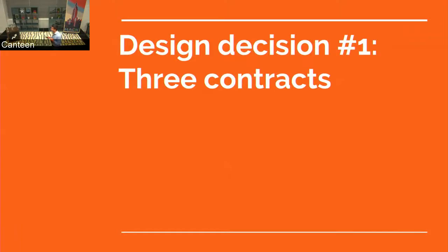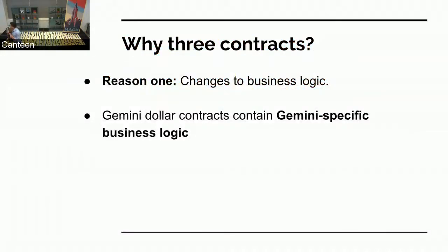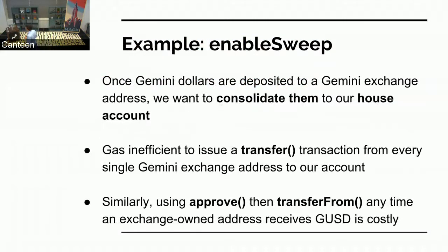We have three contracts. Number one reason: say we have changes to our business logic. Not only is there the ERC-20 standard implemented, but the Gemini dollar also contains Gemini-specific business logic. If we were to change that behind the scenes, we wouldn't want to disrupt everyone else's token experience. Here's an example: once Gemini dollars are deposited to a Gemini exchange address, when you sign up you have an Ethereum address associated with your account. When you deposit a Gemini dollar into it, you get credited a dollar. We want to consolidate all those Gemini dollars and send them to a single house account.